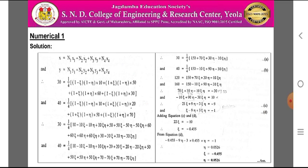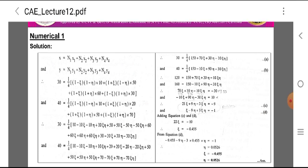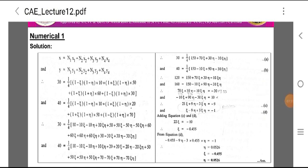Adding equations C and D, we get 22·epsilon = −10, therefore epsilon = −0.455. From equation D, substituting epsilon = −0.455 to find eta: −0.455 − 9·eta − 3(0.455)(eta) = −1, which gives eta = 0.0526.